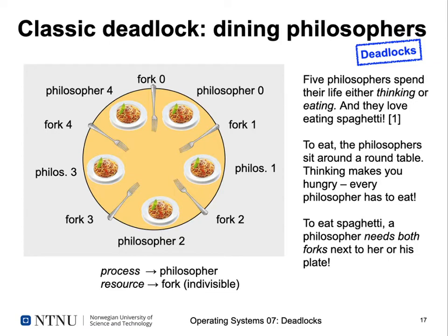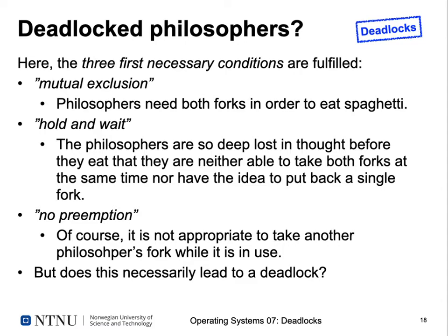Let's check if the three necessary conditions for deadlock are fulfilled. First, mutual exclusion: philosophers need both forks before they can eat. Second, hold and wait: we assume philosophers are so deep in thought that they cannot take both forks simultaneously, and don't think to put back a single fork when they can't get the other — so they hold one fork and wait for the second. Third, no preemption: it's inappropriate to take another philosopher's fork by force while the other is eating.